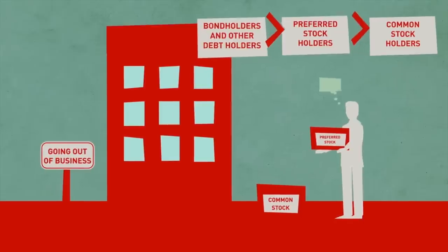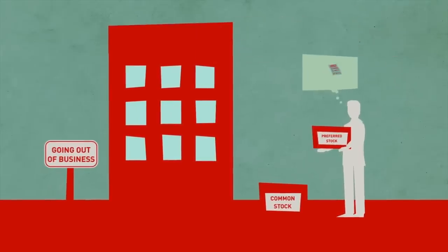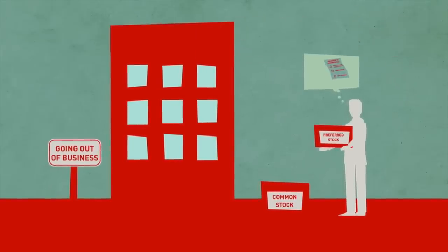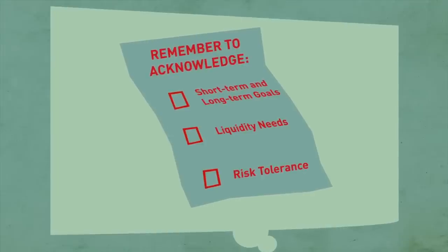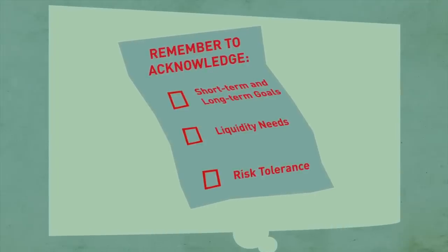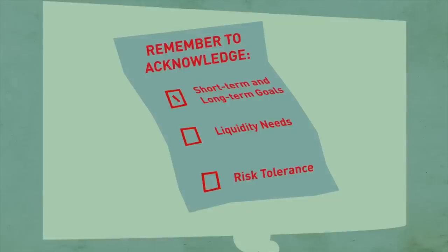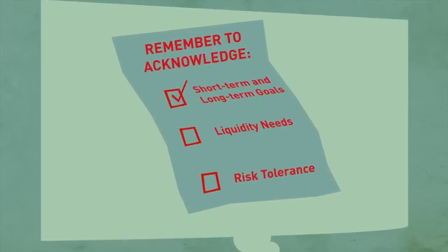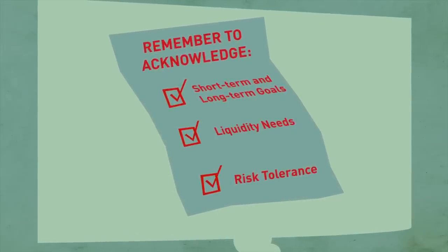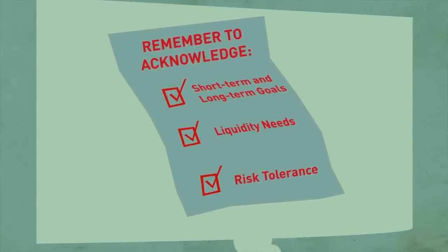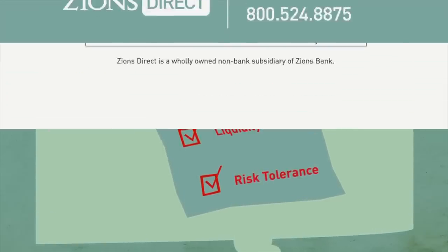With all of this in mind, you can begin to determine your investment strategy. Remember, when choosing the types of securities that are right for you, it is important to acknowledge the inherent risks and consider your short and long-term goals, liquidity needs, and risk tolerance. To learn more about this and other investment topics, subscribe to the Zions Direct YouTube channel.